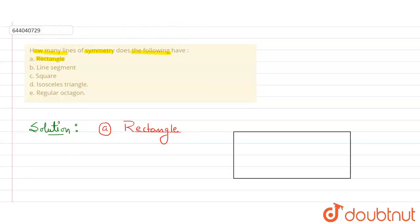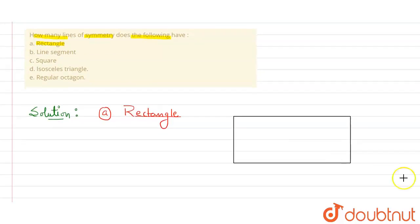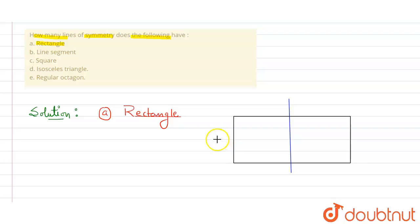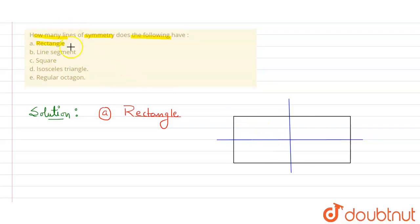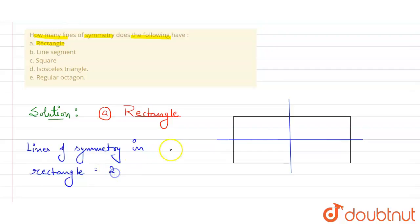Let me draw a rectangle. Now we have to determine how many lines of symmetry a rectangle has. We know that a rectangle has two lines of symmetry — if we draw a line through the middle horizontally, both parts are symmetric, and similarly for a vertical line through the middle. So lines of symmetry in a rectangle equals two.